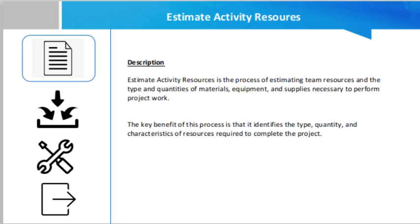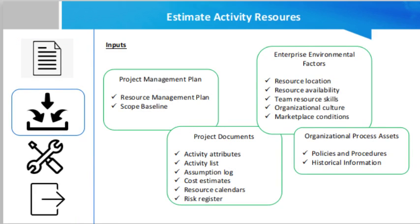Estimate Activity Resources is the process of estimating team resources and the type and quantities of materials, equipment, and supplies necessary to perform project work. The key benefit of this process is that it identifies the type, quantity, and characteristics of resources required to complete the project. This process is closely coordinated with other processes such as the Estimate Cost process.